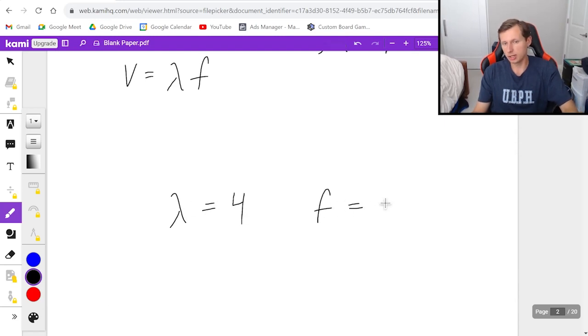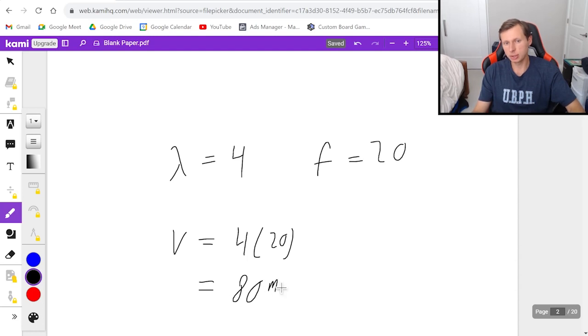And as we said earlier in the problem, the frequency is 20 hertz. So then velocity equals four times 20. We're going to get a velocity of 80 meters per second, not for the string, but for the wave.